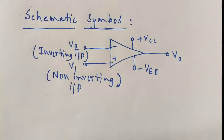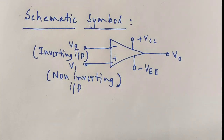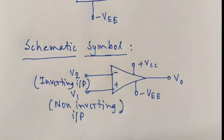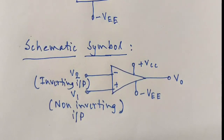The two DC power supplies used in the op-amp circuit — plus VCC and minus VEE — are equal in magnitude and generally taken as plus 15 volts and minus 15 volts. In the next video, I will show the ideal voltage transfer curve for an op-amp and explain the different open loop and closed loop op-amp configurations, as well as the electrical characteristics of an ideal op-amp.